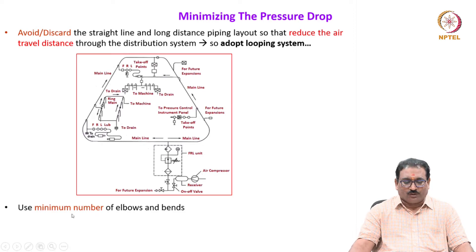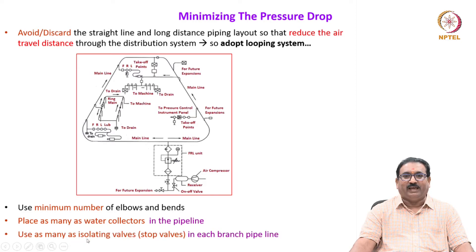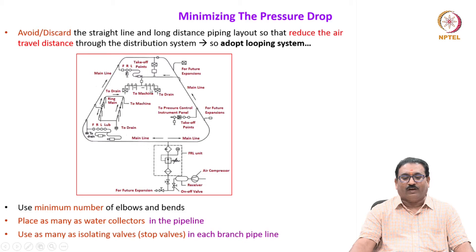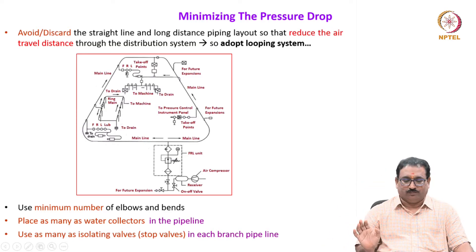Use the minimum number of elbows and bends. Place as many water collectors in the piping as possible. Use as many isolating valves — on-off valves, stop valves — on each branch, because this is very essential. If a branch is not working, the on-off valve cuts it off and air flows through the main line to the next branch. Open the on-off valve to the required branch only as and when required, otherwise keep it closed, because air losses in piping are significant.